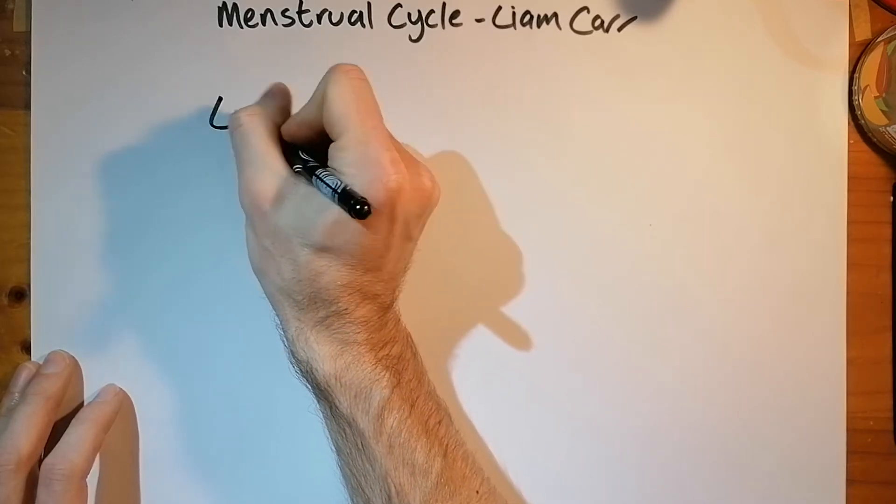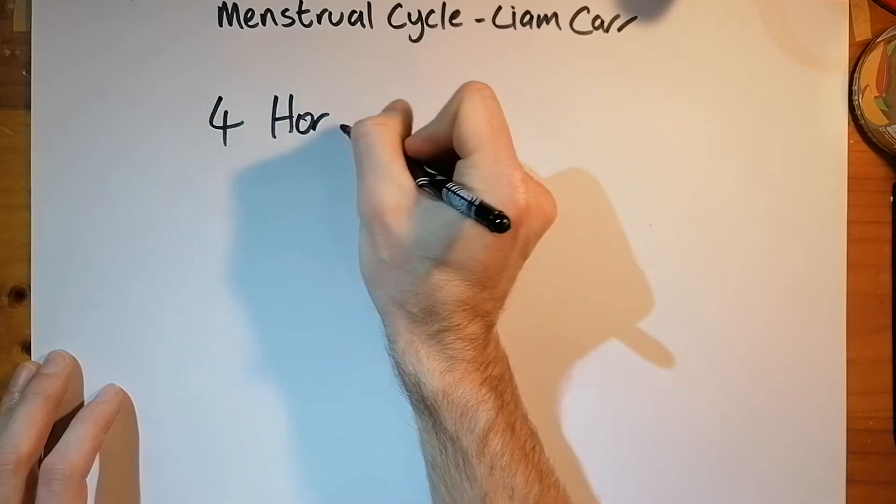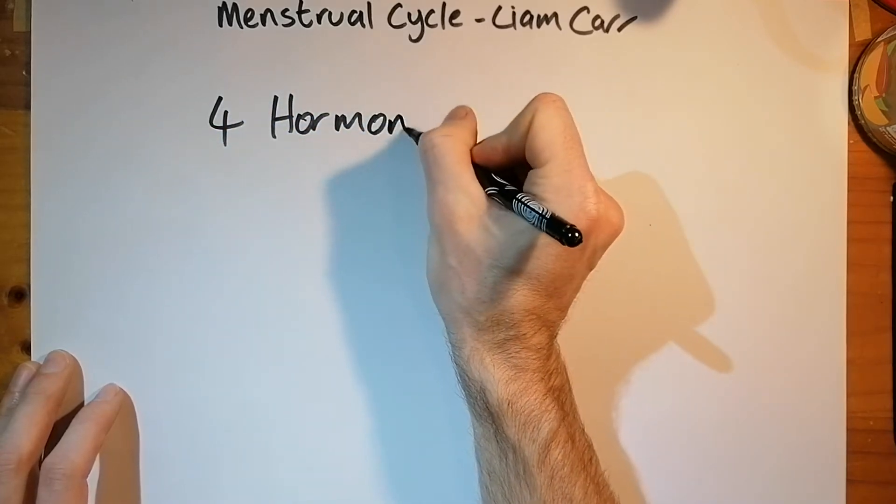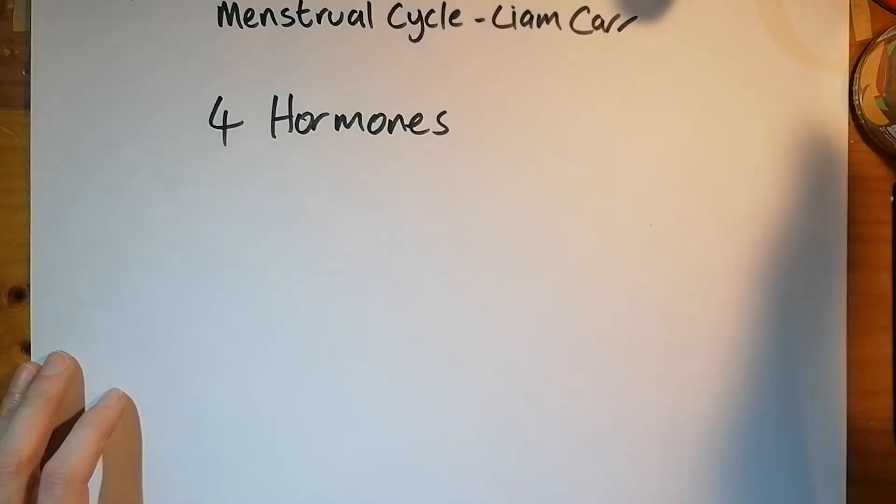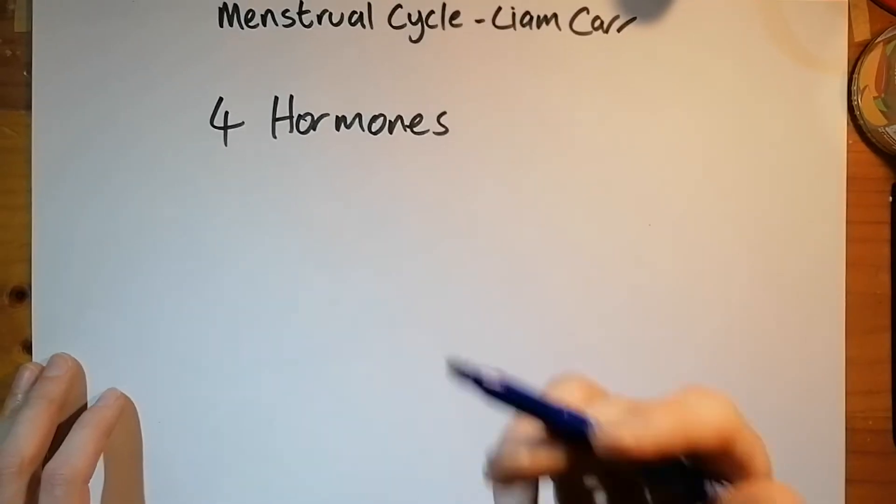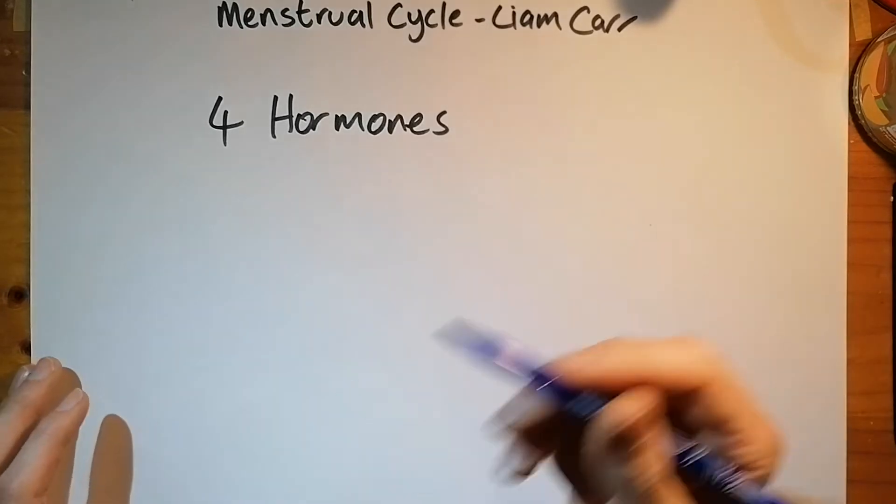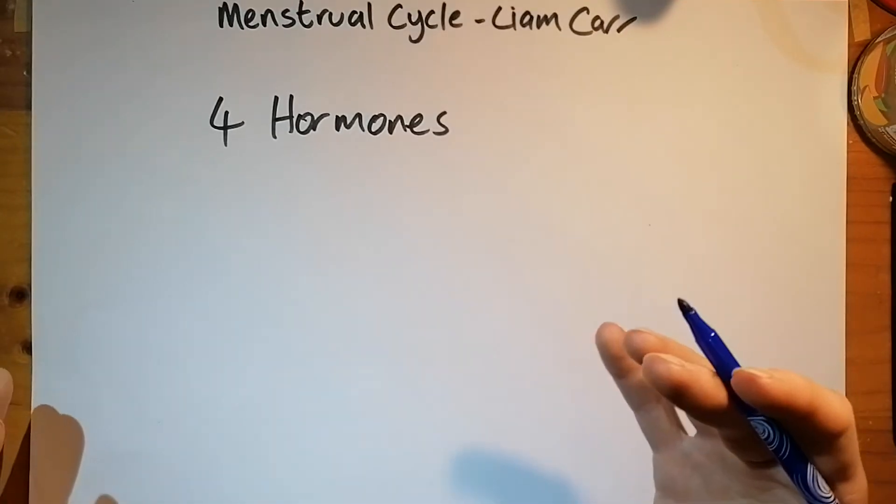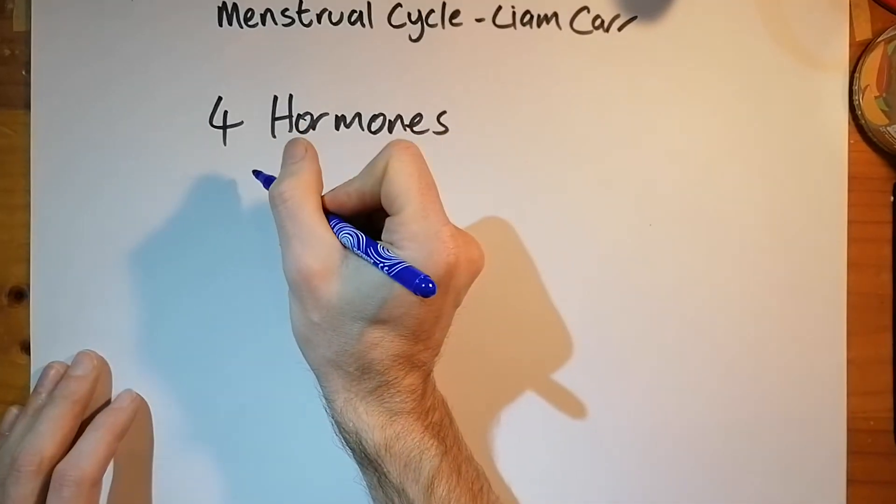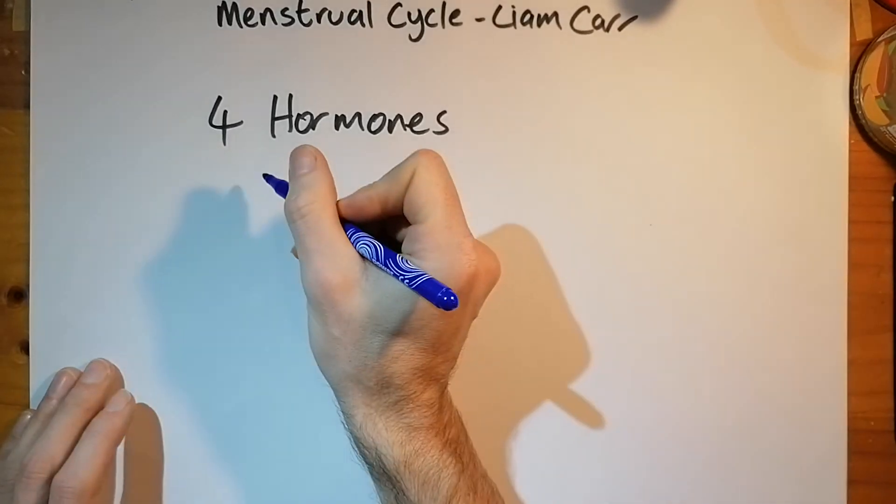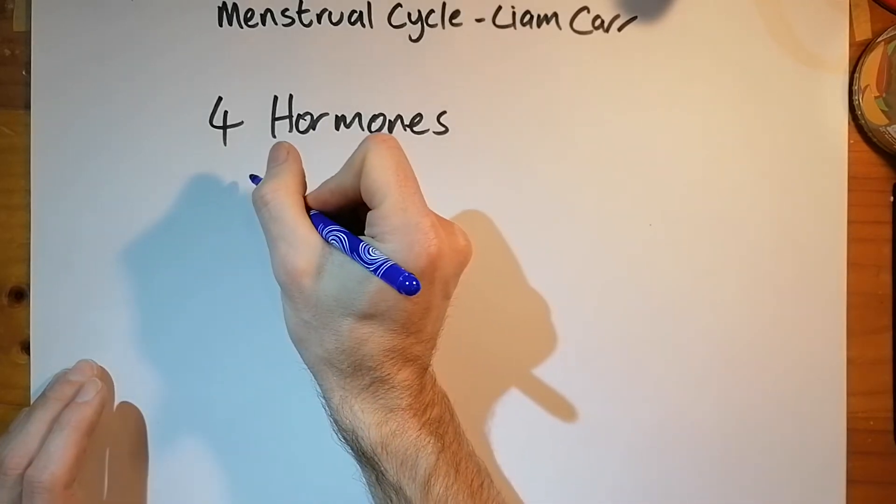There are four hormones which control the menstrual cycle, which makes it a little complicated compared to some of the other hormonally controlled aspects that we find in the body, like the control of water balance, for example, which only has one hormone, or the control of blood glucose, which is controlled by two main hormones. Menstrual cycle has four.